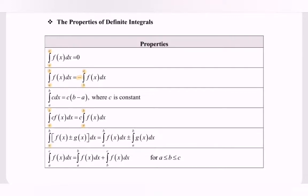The next property: we can split the function f(x) into two integrals, where we have the integral of f(x) with respect to x for the limits a to b, plus or minus the integral of another function g(x) with respect to x for the limits a to b.